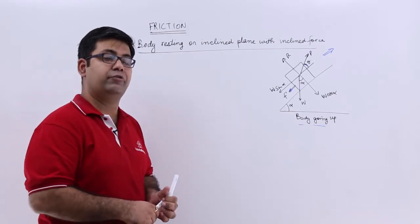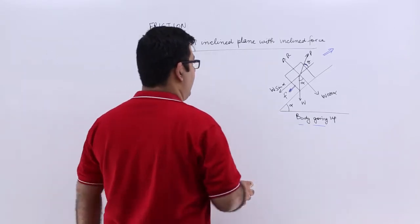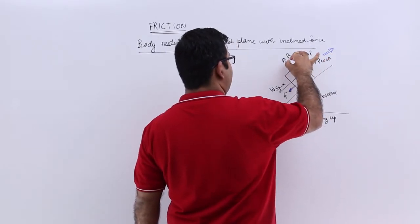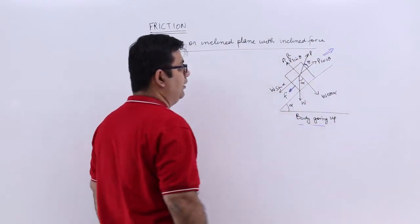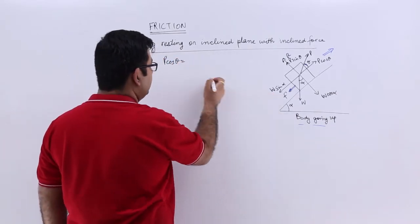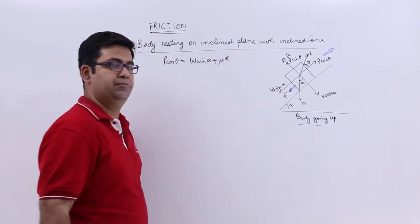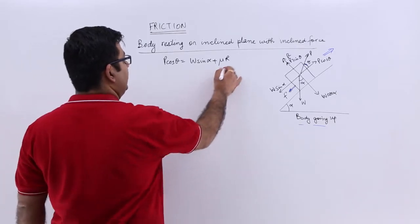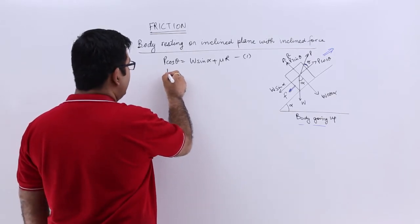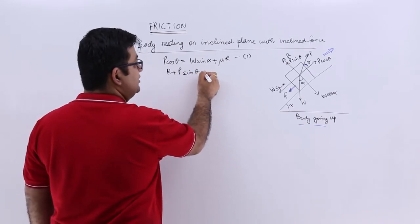We will do two things: resolve the forces parallel to the inclined plane and perpendicular to the inclined plane. Parallel to the inclined plane you will have p·cosθ, and perpendicular to the plane you will have p·sinθ. So parallel to the plane: p·cosθ = f + w·sinα, where f is μr. Let's call this equation one.